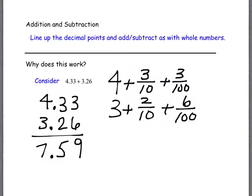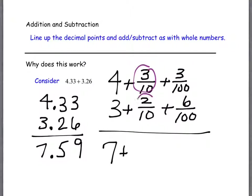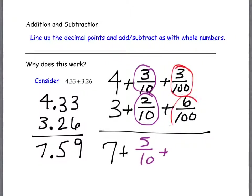There are portions where we could change things — like, I could change the denominator of 10 into 100 so they'd have common denominators. But without doing that, I can simply add the ones that already have common denominators. So the 4 and the 3 get added together as whole numbers. The 3 over 10 and the 2 over 10 get added together, giving 5 out of 10. And the 3 out of 100 and 6 out of 100 get added together, giving 9 out of 100.